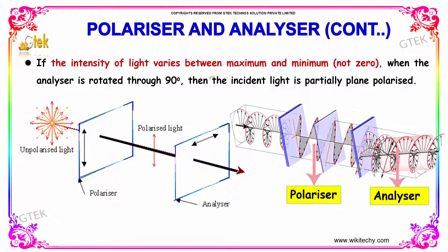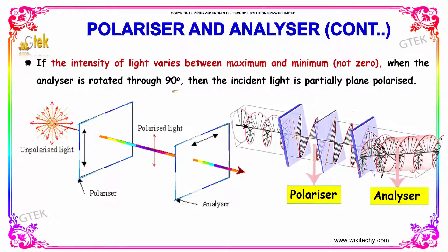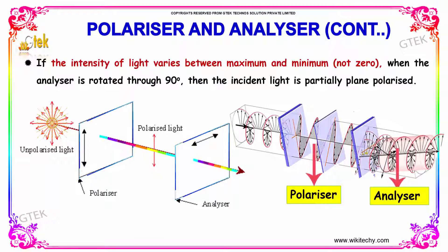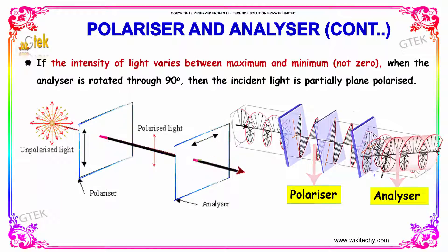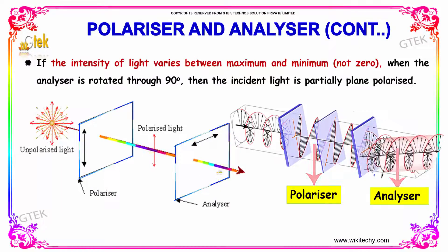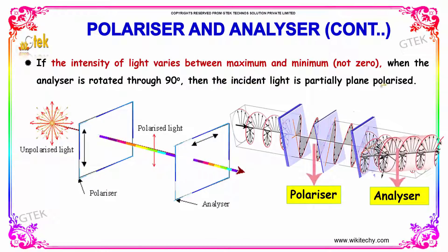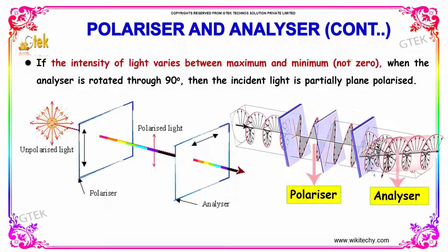If the intensity of the light varies between maximum and minimum when the analyzer is rotated through 90 degrees, then the incident light is partially plane polarized and it is not zero.